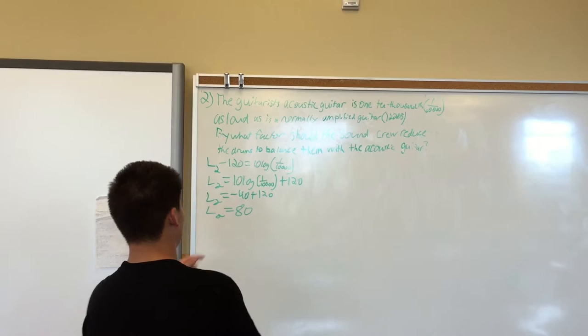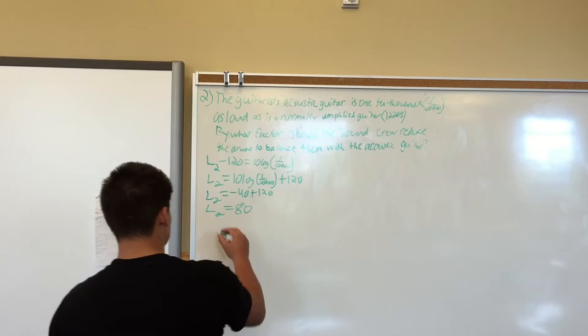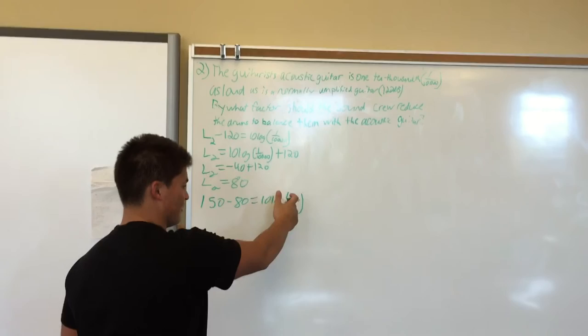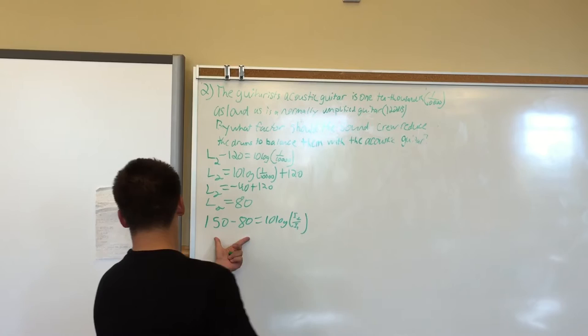Now we know the drums is 150 decibels, and now we know the acoustic guitar is L2. So we set up the equation to look like 150 minus 80 equals 10 log I2 over I1, which is the ratio that we're trying to find. We're going to isolate for I2 over I1.